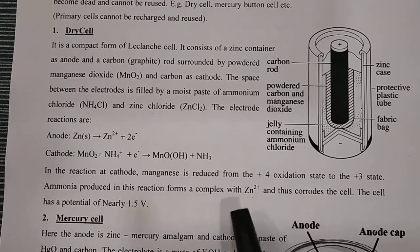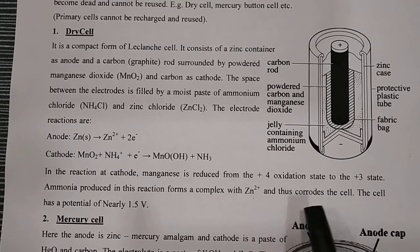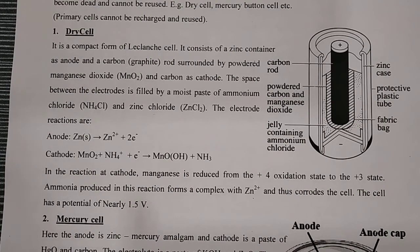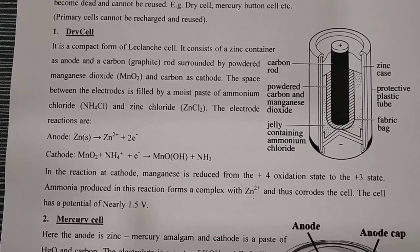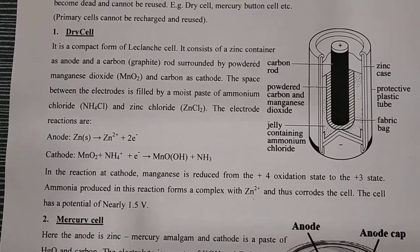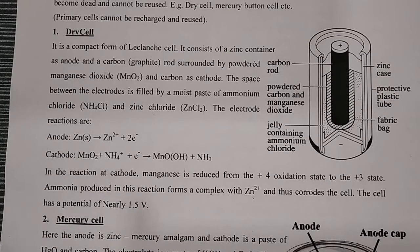The ammonia produced in this reaction forms a complex with Zn²⁺, and this complex corrodes the cell — that is why you may have noticed corrosion on the upper and lower parts of a used cell. When ammonia is treated with zinc, it makes a complex, and this complex causes corrosion. The cell has a potential of nearly 1.5 volts output.